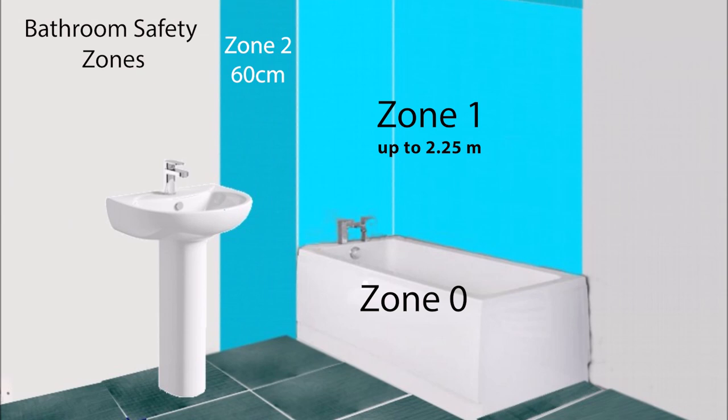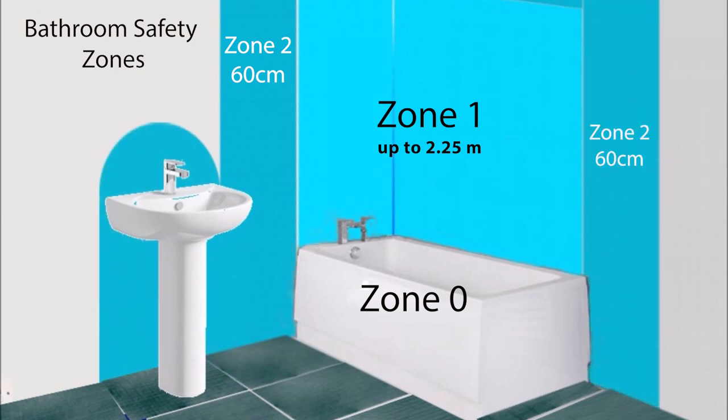Zone 2 is a 60 centimeters wide area outside zone 1 and also around the wash basin. You are allowed to install shaving socket in zone 2 but obviously in a place where there will be no water splashes from the shower or wash basin.